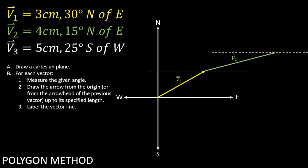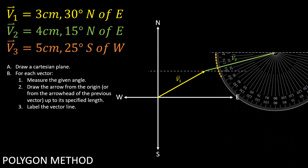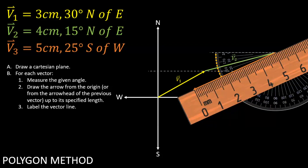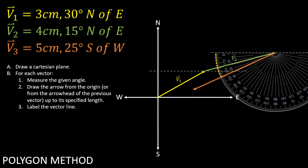For this third vector, take note of the direction. Since it is 25 degrees south of west, you should measure your angle from the west going southward. Then proceed with drawing a 5 cm line in that direction.